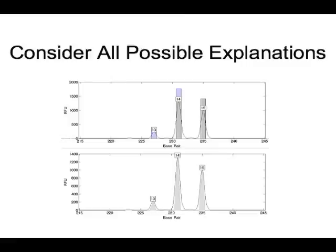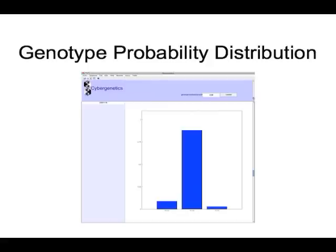The computer tries every possibility, each time generating a pattern explaining some amount of DNA at that mixture proportion. With those allele pairs it explains the data very well — the gray bars pretty much match the green data. It tries absolutely everything, and when finished, there's a probability distribution at every locus. Since it has tried all possible allele pairs including all variants, it has evaluated thousands of possibilities, of which very few are probable. In this case, the 13,14 pair was given virtually all the probability.